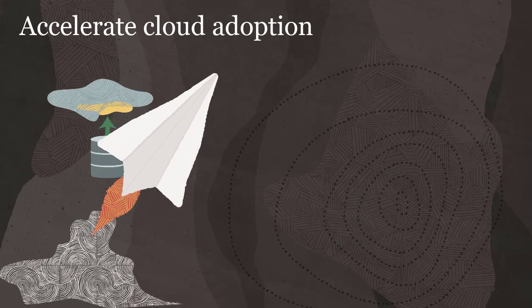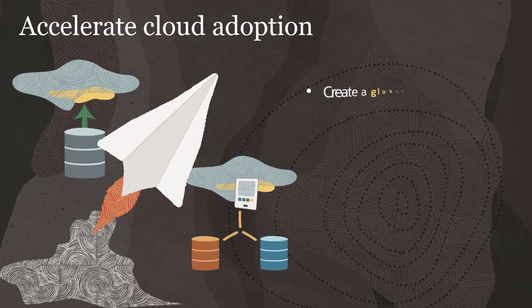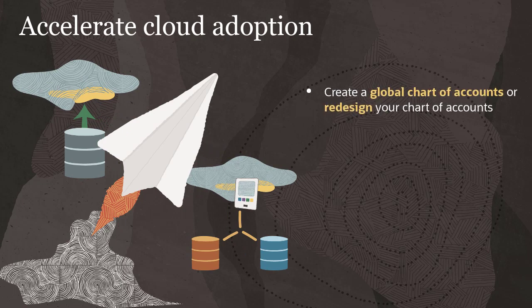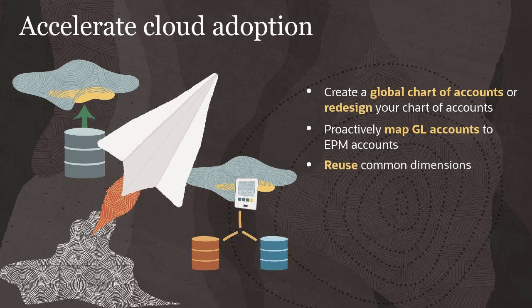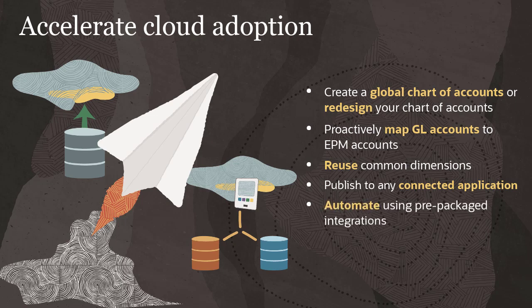Support cloud migration and coexistence initiatives by creating a global chart of accounts or redesigning your chart of accounts. You can proactively map GL accounts to EPM accounts to eliminate data rejection and reuse common dimensions to accelerate the deployment of new business processes. Publish to any connected application — Oracle and non-Oracle, cloud or on-premises — and automate your processes using prepackaged integrations at no additional cost.